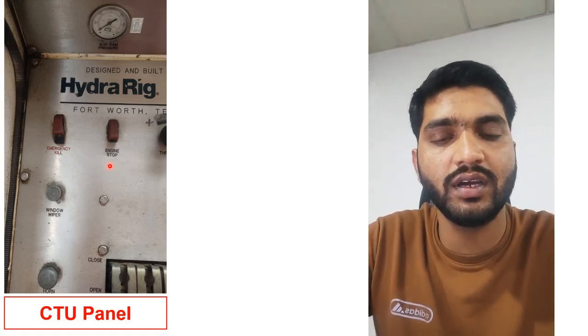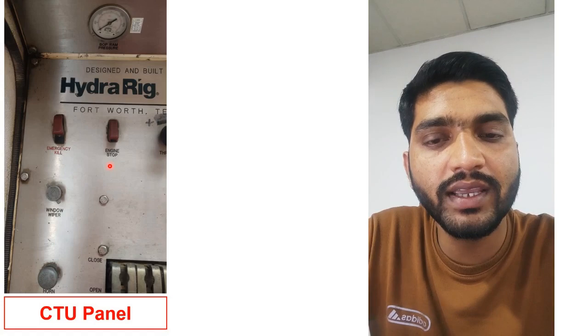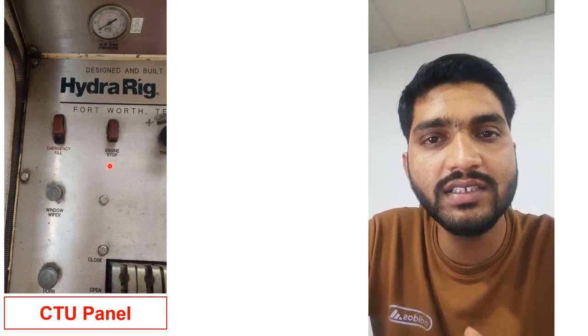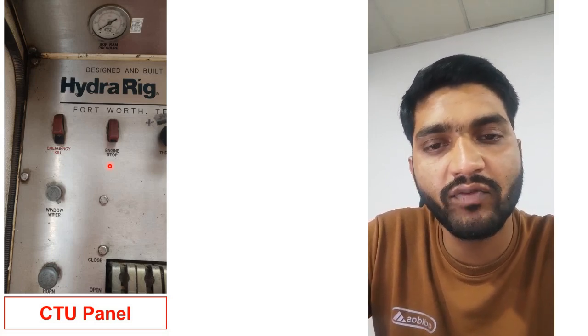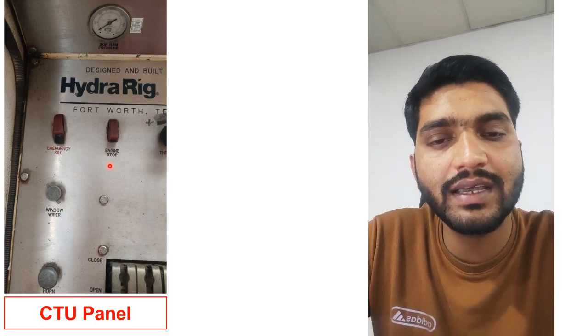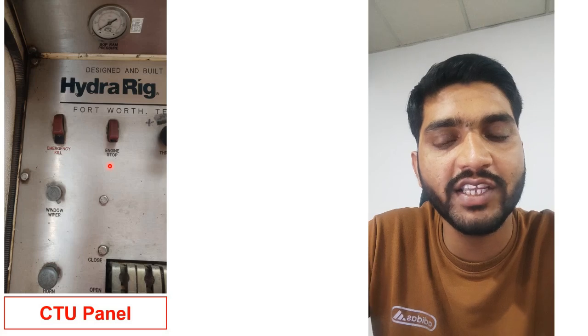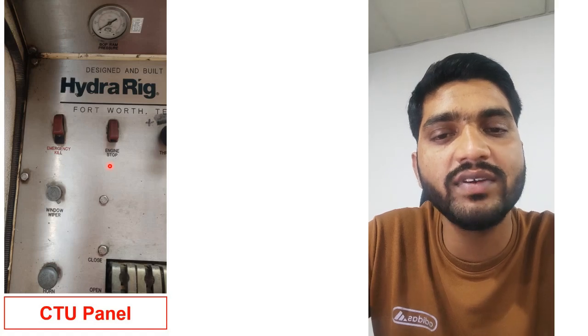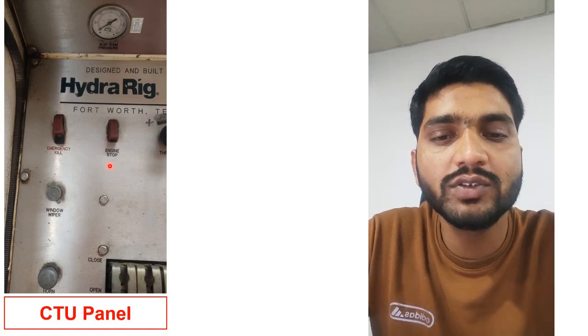Now we will discuss how they work. Talking about the first method — the normal kill — when we press this normal kill button, it shuts off or stops the supply of diesel. You know that for the running of an engine, we need to supply two things: diesel and air mixture. So when we press this normal kill button, it will shut off the supply of diesel, and once the diesel supply is cut off, the engine will be stopped. This is the working mechanism of the normal kill.